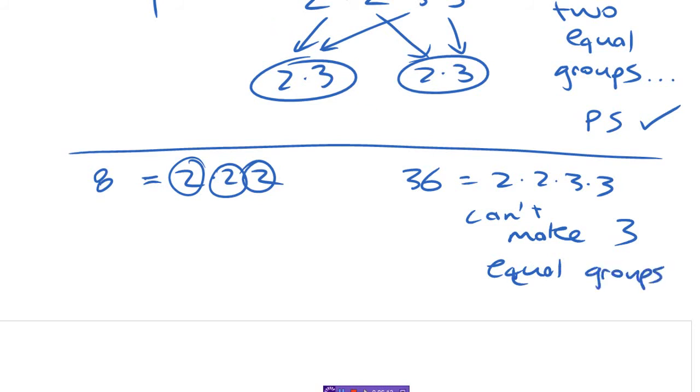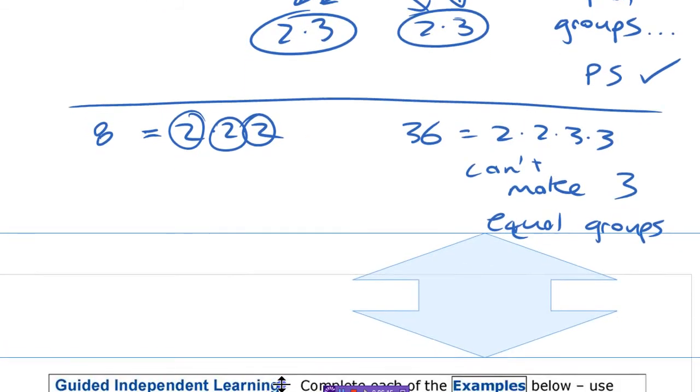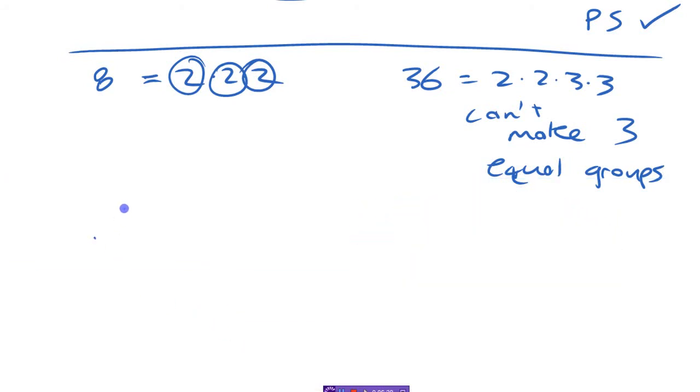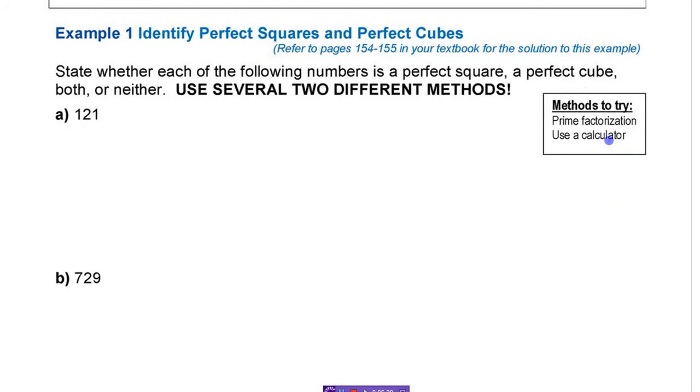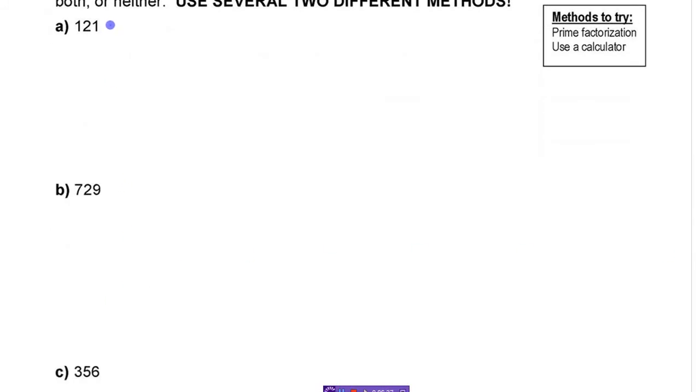Let's look at this 729. 121 you probably know whether that's a perfect square already. Is 121 a perfect square? It is. 121 is actually 11 times 11. It is a perfect square. It's not a perfect cube. You can't make three equal groups. 121 is 11 squared, but there's nothing that gives you that cube.